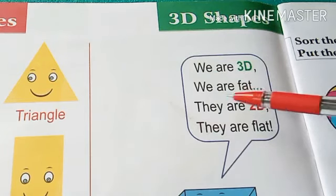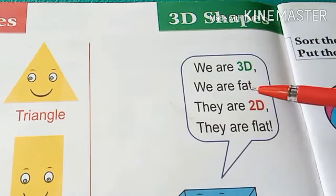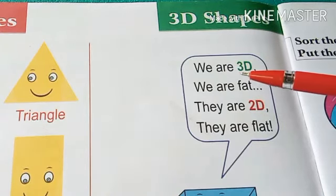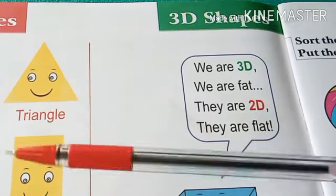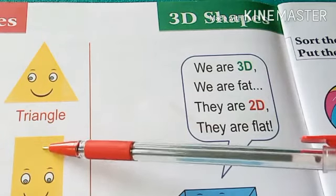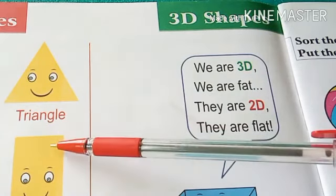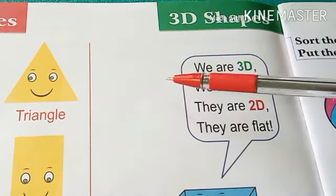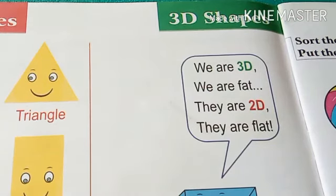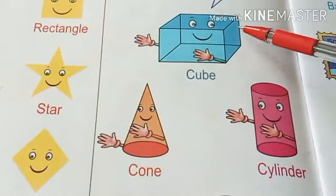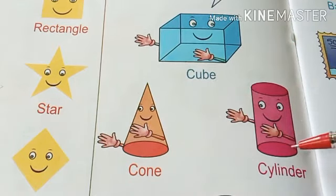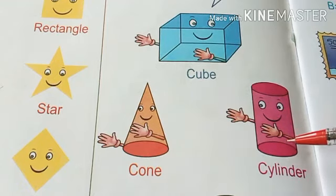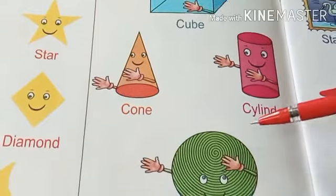We are 3D — we are fat, we are 3D. They are 2D — they are flat. This is a cube, this is a cone, this is a cylinder.